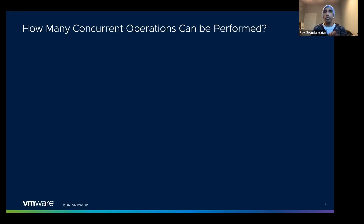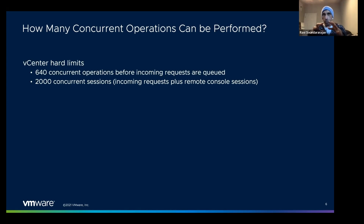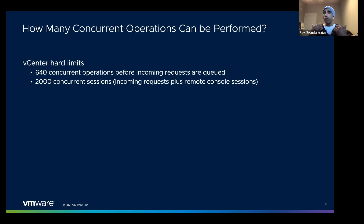There are two hard limits to keep in mind, and these limits are global — across an entire vCenter. You can do about 640 (the actual number is closer to 600) concurrent operations before vCenter will start queuing operations. About 600 can be live at once. You also have about 2,000 sessions you can use at a time — you can log in about 2,000 times before vCenter starts rejecting those sessions.